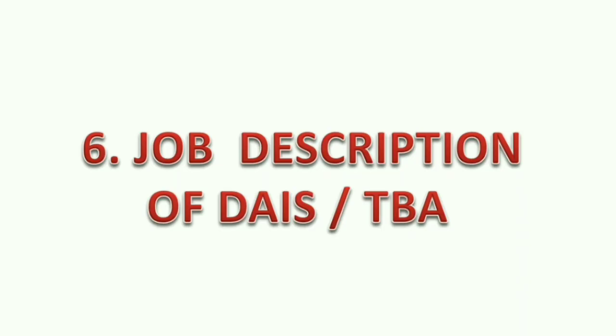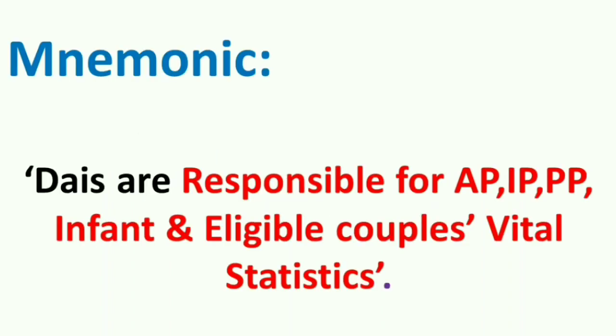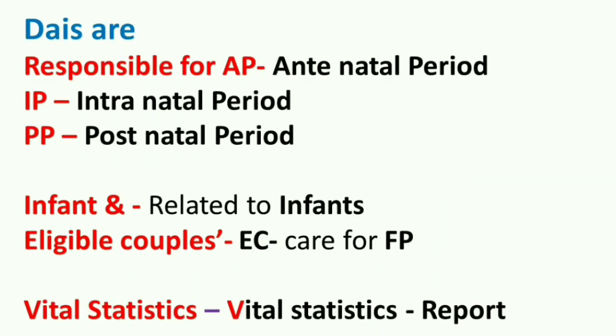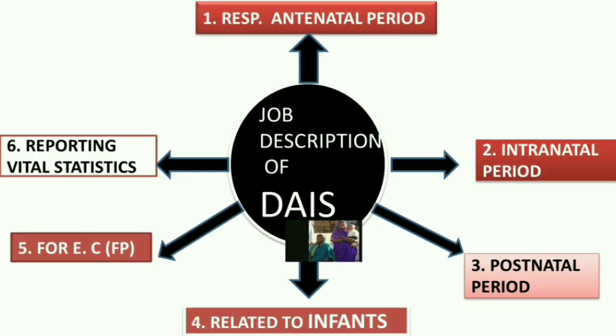Job description of DAIS or traditional birth attendant — the mnemonic is 'DAIS ARE RESPONSIBLE FOR AP, IP, PP, INFANT, AND ELIGIBLE COUPLES VITAL STATISTICS.' AP stands for antenatal period care; IP for intranatal period; PP for postnatal period; INFANT for infant care; ELIGIBLE COUPLES for eligible couples care for family planning. You can use this diagram to explain in detail.